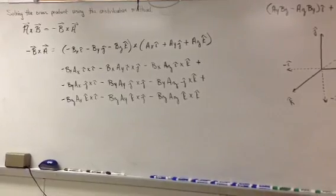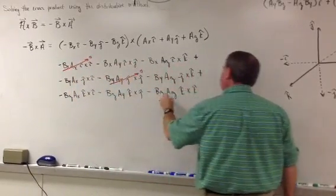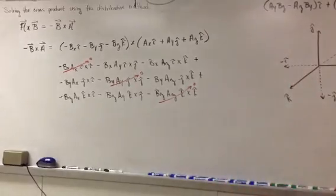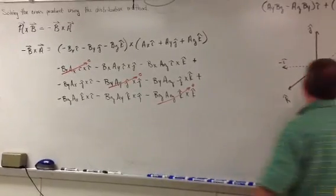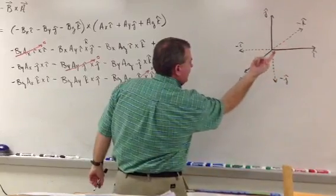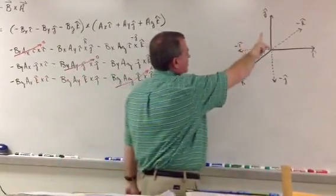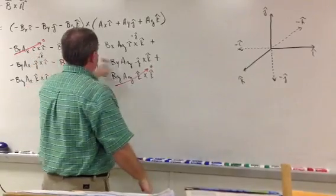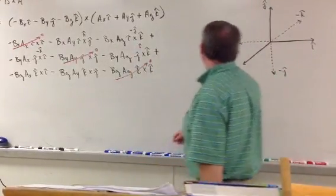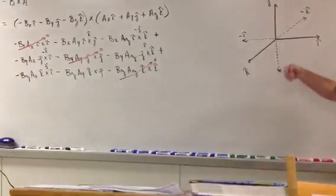Now, i cross i, j cross j, and k cross k are all equal to zero from your notes, so we're going to zero those out. We will use the right-hand rule to figure out the remaining cross products: i cross j is positive k; i cross k is negative j; j cross i is negative k; j cross k is positive i; k cross i is positive j; k cross j is negative i.